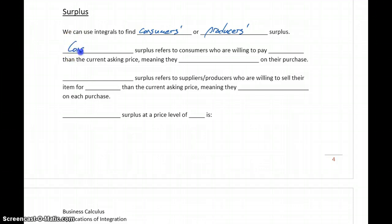Consumer surplus refers to consumers who are willing to pay more than the current asking price for an item, meaning they actually save money on their purchase. So whatever that item is currently being sold for, they would have still purchased it even if the price was higher.